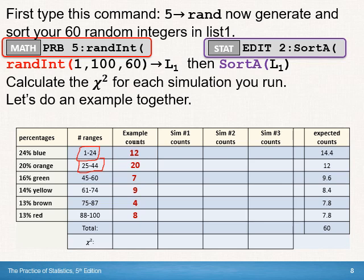It's not a bad idea when you're doing these simulations to add those numbers up to make sure that they add up to 60. And then calculate your chi squared. I got 8.337.